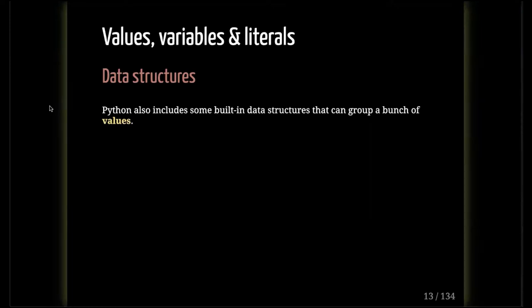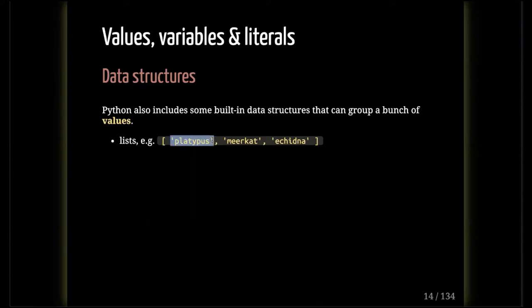There are additional things we'd more properly term data structures, though sometimes they get bundled with data types. These are grouping structures, and they are lists. Here's a list of unusual animals: platypus, meerkat, and echidna. The actual values in the list — the singular smallest unit of information — are strings themselves. They're grouped together in this list-like structure. You separate the values with commas. That's how you write a list.